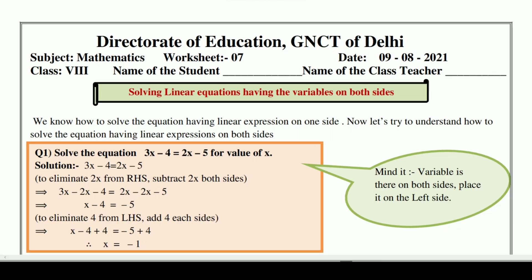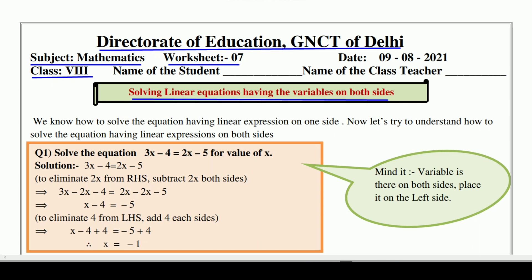Hello and welcome to Lavneesh Sarki class. This is Direct Rate of Education GNCT of Delhi's Worksheet No. 7, and it is only for class 8 students. It has been taken from the subject Mathematics, and we will learn and understand the topic: solving linear equations having variables on both sides.